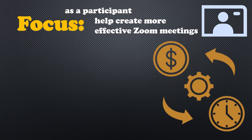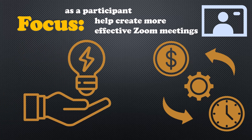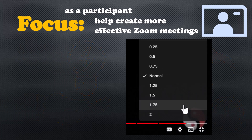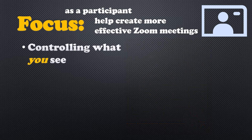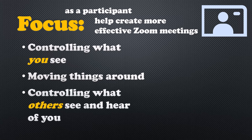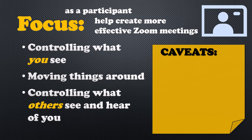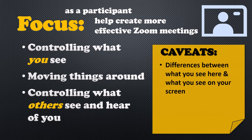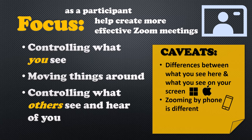While we'll probably cover some things you already know, there may be some new hints you can use. I'm going to speed through these things: from controlling what you see, to moving things around to make things easier for you, to controlling what others see and hear of you. There may be some differences between what you see in this video and what you see on your screen. I'm using a Windows computer and you may be using a Mac. Zooming by phone is an entirely different animal, and keep in mind that Zoom is always adding new features. Even if you use another video conferencing platform, knowing what options you have in Zoom may help you figure out how to use them elsewhere.